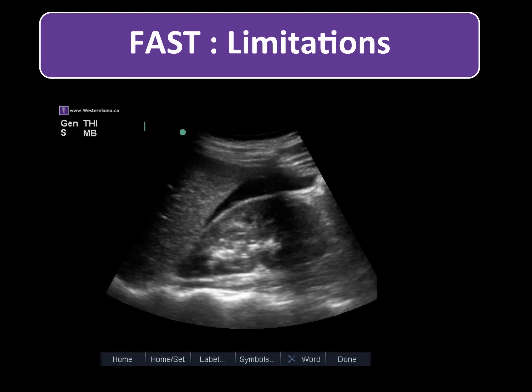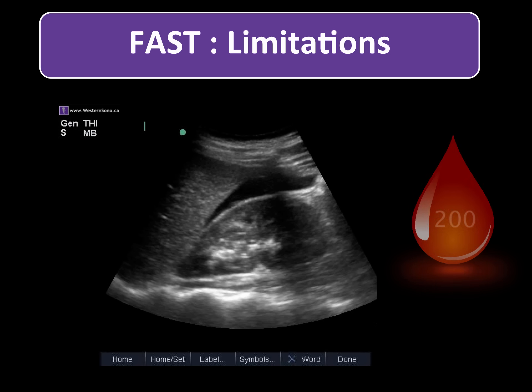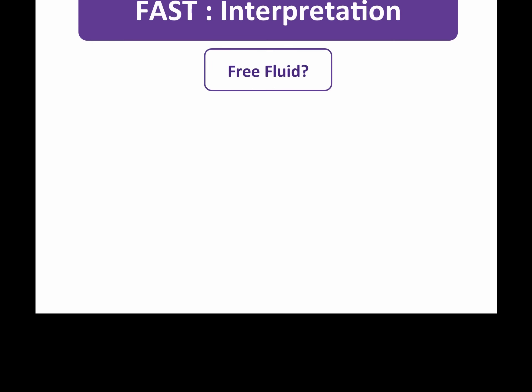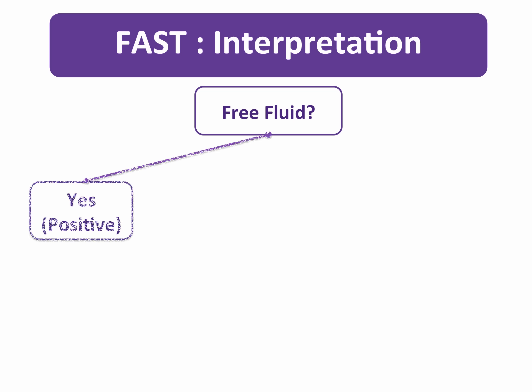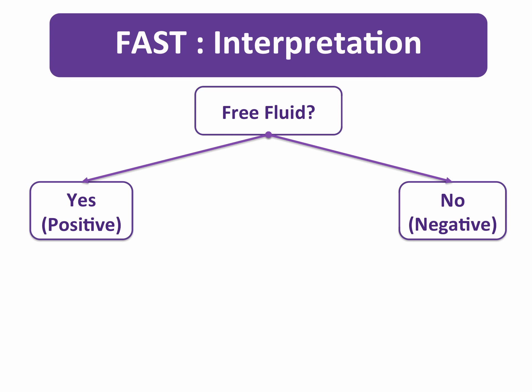It is also important to realize that about 200 cc is needed to begin to obtain a positive FAST. Some traumatic injuries that may be very clinically relevant, such as a bowel perforation or a diaphragmatic rupture, do not produce a lot of bleeding, and if they occur in isolation they may present with a negative FAST exam. There are three possible outcomes for the FAST exam: positive if free fluid is seen, negative if all views are adequately seen and no free fluid is present, or indeterminate.